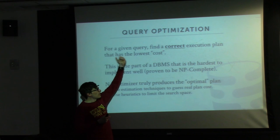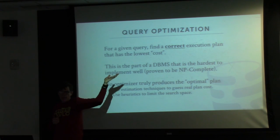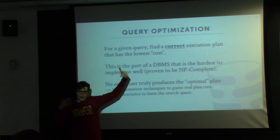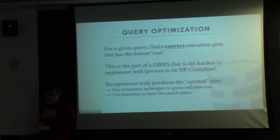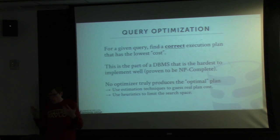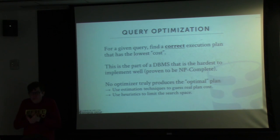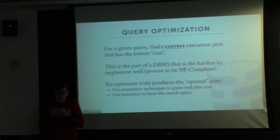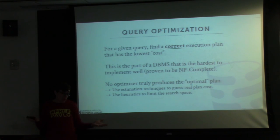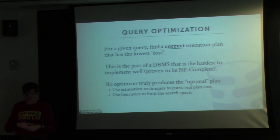I'm emphasizing two points: first, the word 'correct' — if we choose a plan that may be the fastest but produces an incorrect result, that's useless. So as we transform our query and explore different options, we always need to ensure we're producing a correct result. I'm putting 'lower cost' in quotation marks because it's not a cost measurable outside of the system — not wall clock time or something physical. This cost is internal and relative to other query plans for that particular database instance.